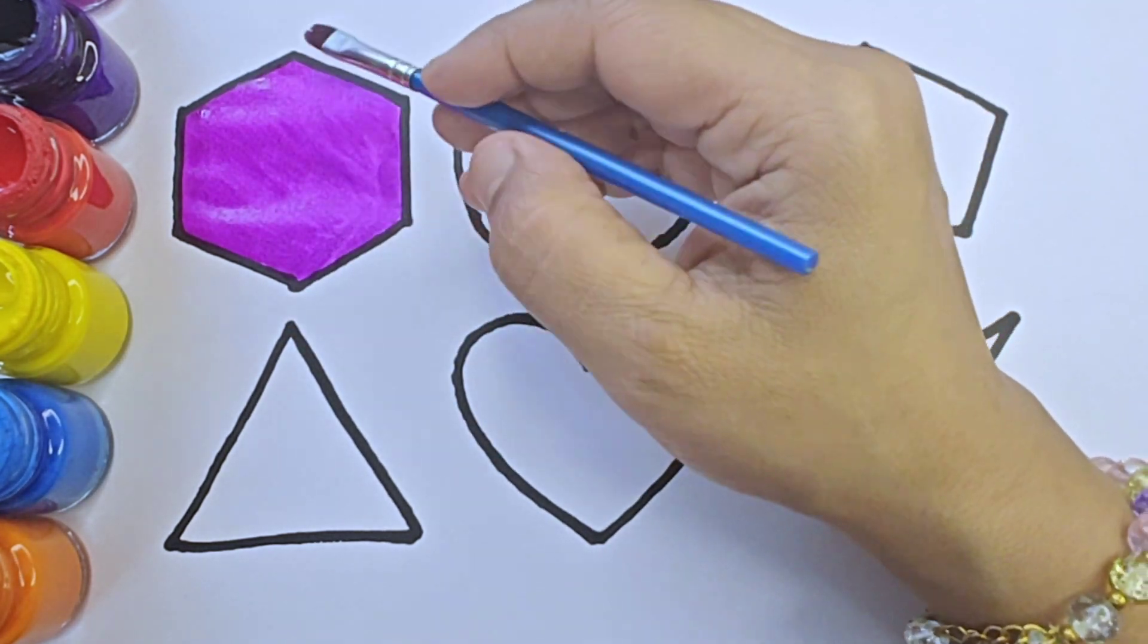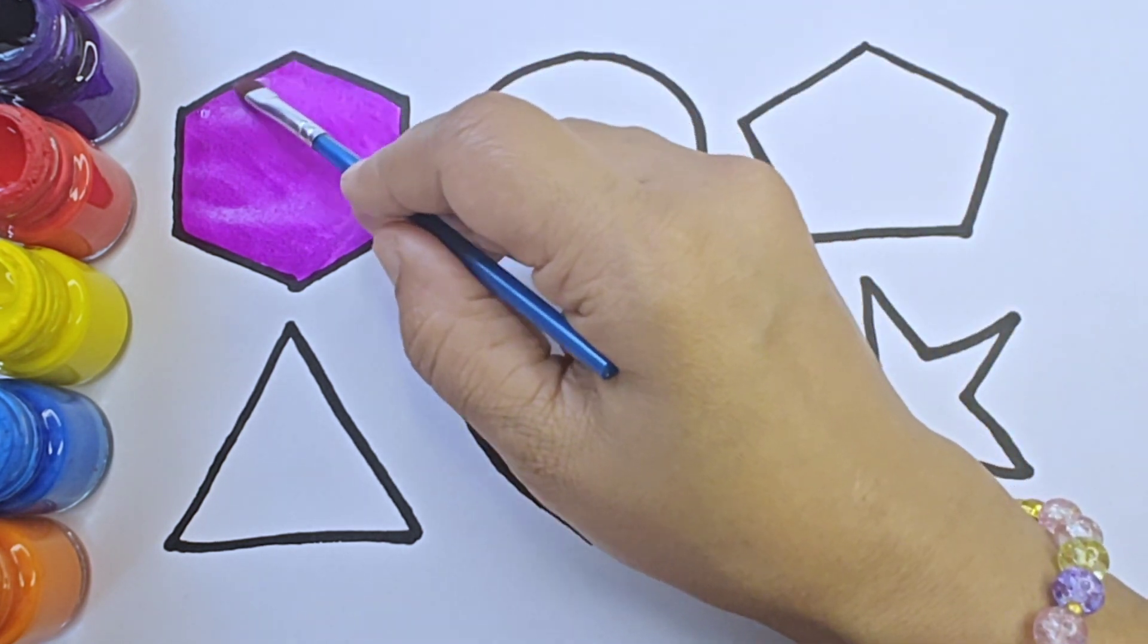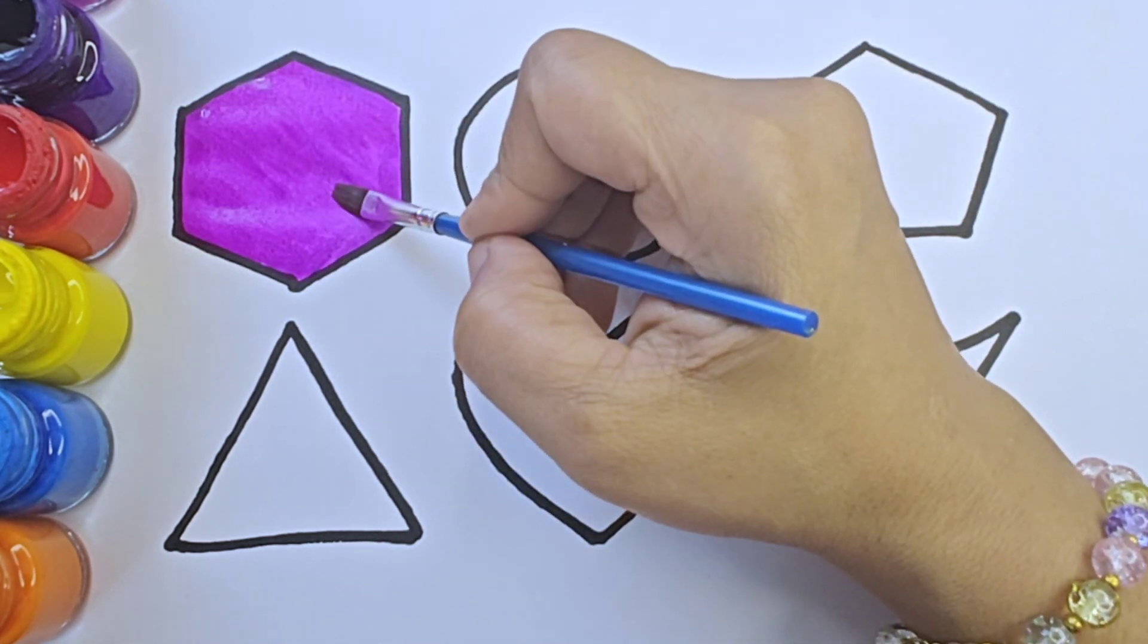It is hexagon, it has six sides. One, two, three, four, five, six. It is a 2D shape.